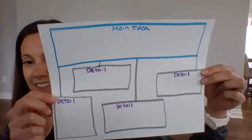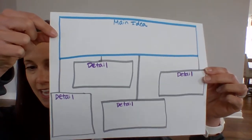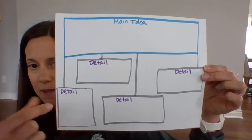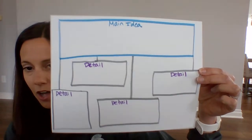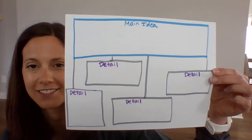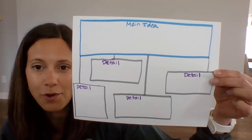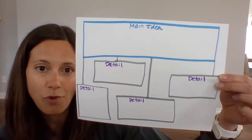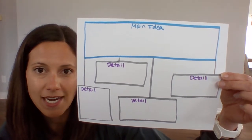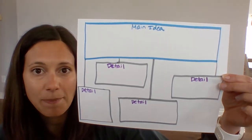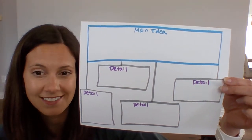When we're thinking about main idea and detail, sometimes it can help to use something called a graphic organizer. I just made mine on a blank piece of paper — a larger spot at the top for the main idea, and then four smaller boxes for the details. You can make something like this too, or you could just write out on a piece of paper what the main idea is and leave space for four details.